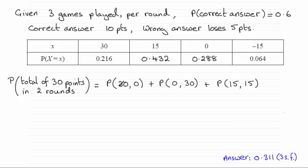So when it comes to working out the probability, say of 30 in the first round and 0 in the second round, remember you need to multiply the two probabilities together.